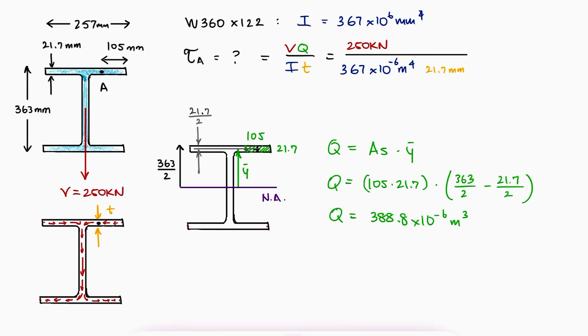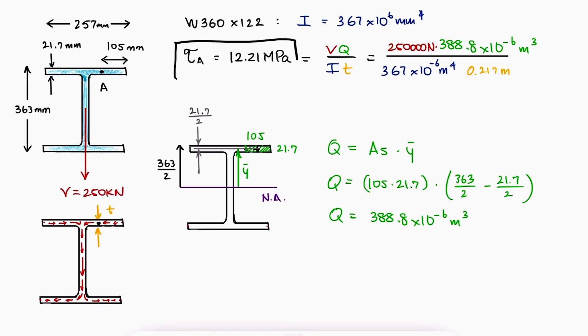With this Q value, we can substitute it in the shearing stress equation and find that the shearing stress at A is 12.21 MPa.